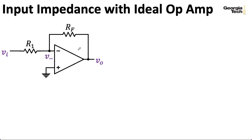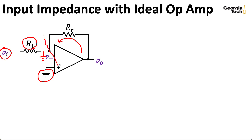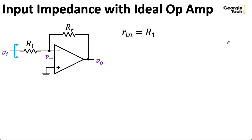If we assume that we have infinite gain over an infinite range of frequencies, then the negative feedback results in the voltage at the positive terminal, which here is ground, being copied at the negative terminal. So from the point of view of the voltage source driving the circuit, it just sees a resistance R1 to ground, and doesn't know about what's happening to the right of the line I just drew. So in this case, the input impedance is just R1, and you could do this without any detailed circuit analysis.